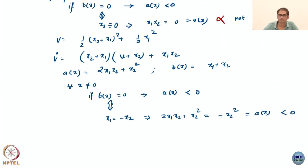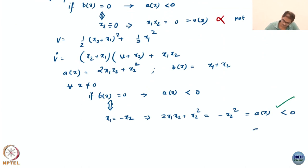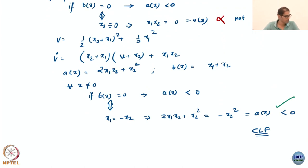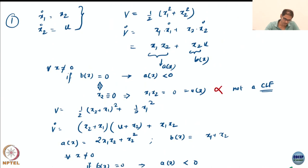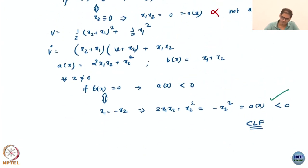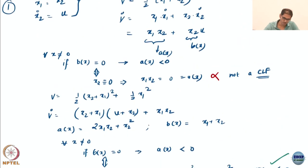Already nice things have happened — b(x) now also has the term α·x₁. So b(x) = 0 implies x₂ = -α·x₁. Now what do I get for a(x) in this case? Substituting x₂ = -α·x₁ into a(x): from the first term I get -α·x₁², and from the α·x₂² term I get α³·x₁². So a(x) = -(α - α³)·x₁² = -(α - α³)·x₁².